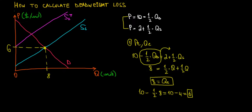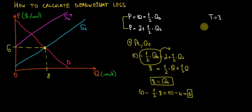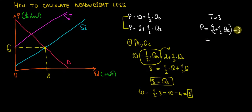Now suppose we have a specific tax of $3 per unit. The new supply curve has to shift up by 3 units, so we add 3 to the original supply curve. Price equals 2 plus 1/2 Qs plus 3, which gives us 5 plus 1/2 Qs as our new supply curve.